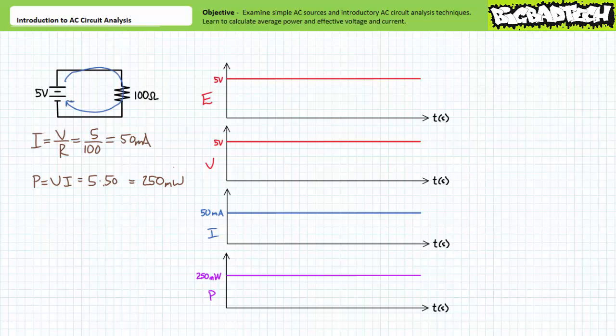Given the magnitude and polarity of the supply is fixed, current will not only remain constant but will flow in one direction only. If we were to plot voltage across the resistive load, current through it, and power dissipated by it as a function of time, they'd be relatively uneventful flat lines.